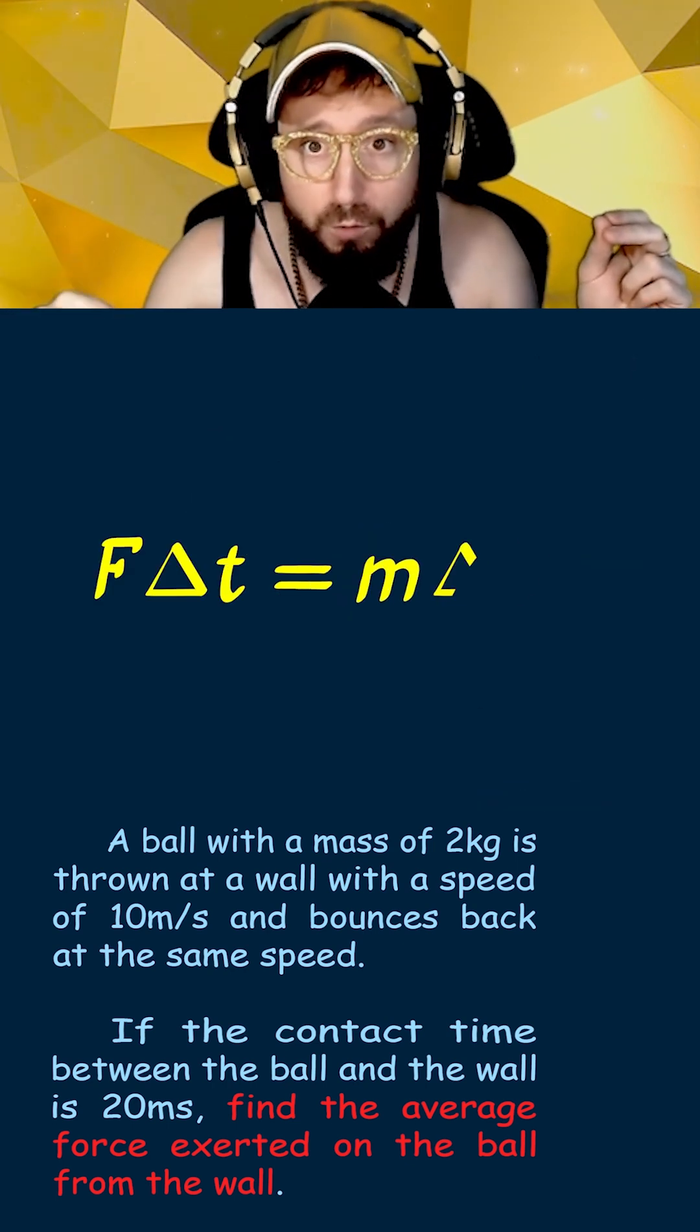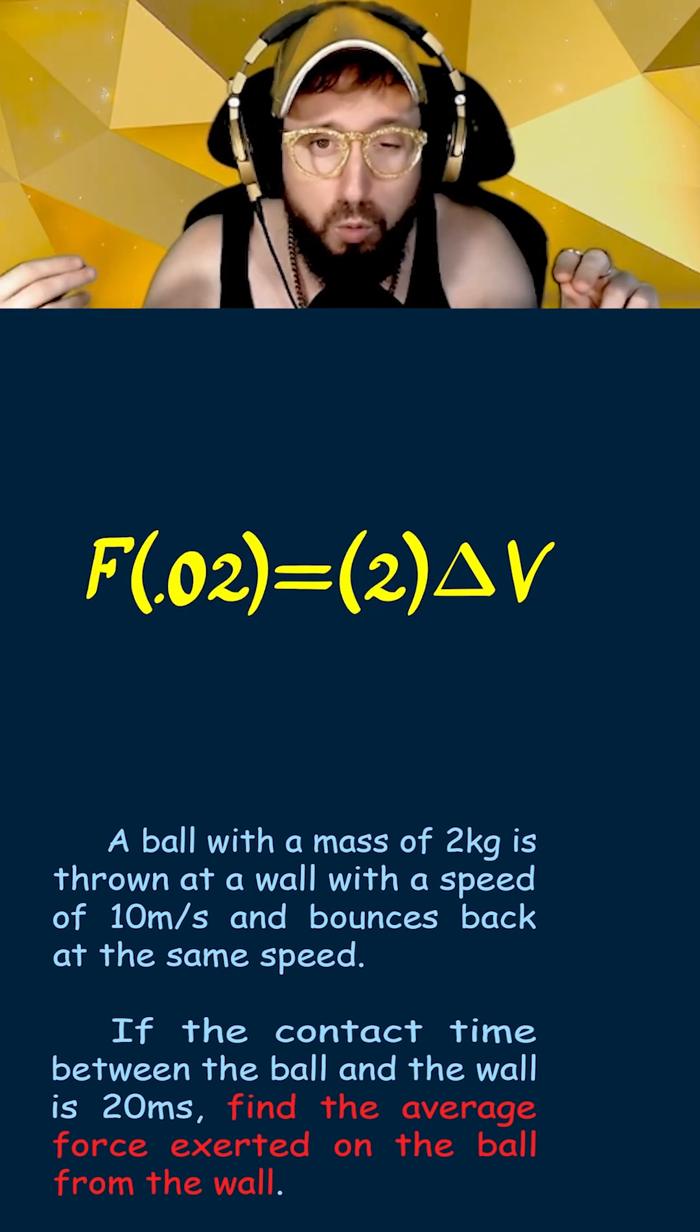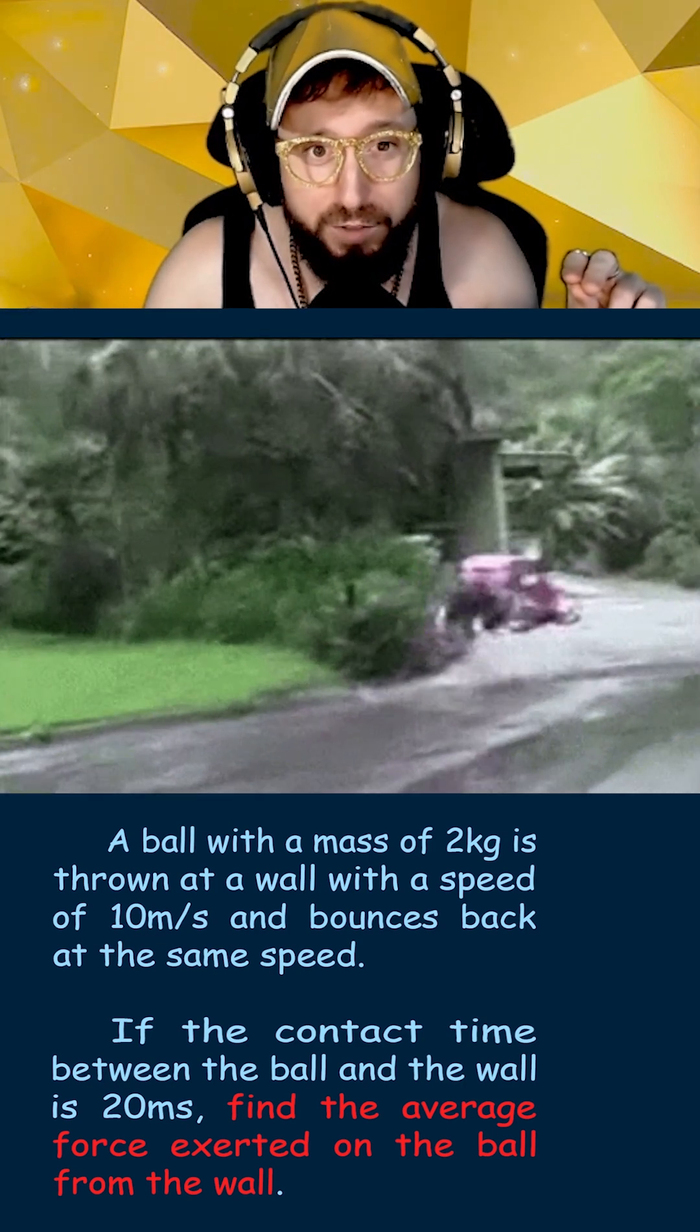Here we can use our impulse formula to solve for the average force, f, by plugging in 2 for the mass and 20 milliseconds, or 0.02 seconds for delta t, since that's the duration of the collision.